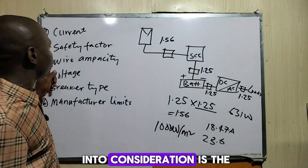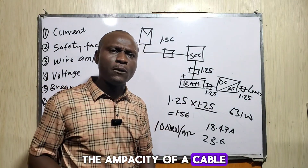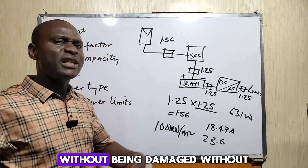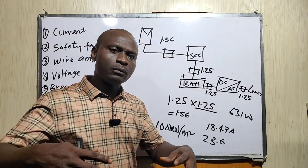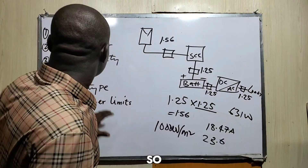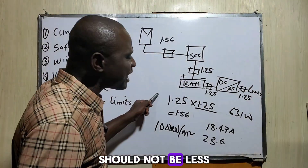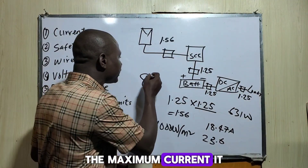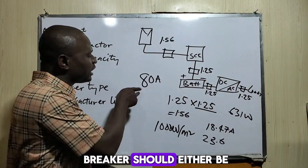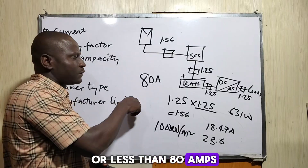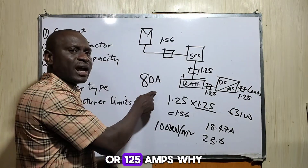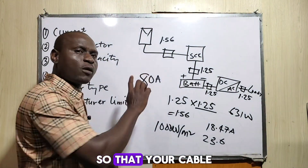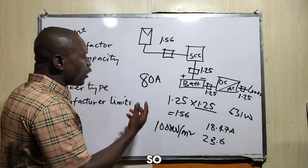The third factor is wire ampacity. The ampacity of a cable is the maximum amount of current a cable can carry continuously without being damaged or experiencing overheating. The ampacity of the cable should not be less than the size of your breaker. If your cable's ampacity — the maximum current it can carry — is 80 amps, the size of your breaker should be 80 amps or less.